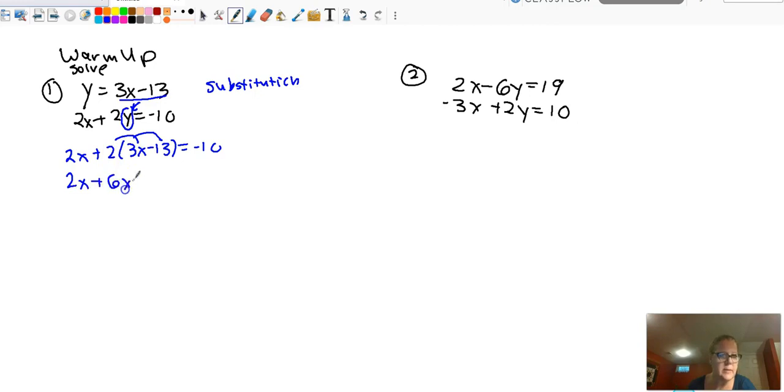2x plus 3 times 2, which is 6x minus 26, equals negative 10. Your like terms are your x terms. 2x plus 6x is 8x. I'm going to add 26 to both sides. And we have 8x equaling negative 10 plus 26, which is 16. Again, this is a unit where you're allowed to have your calculator, so you don't need to remember that.